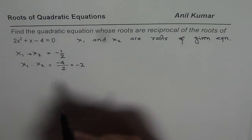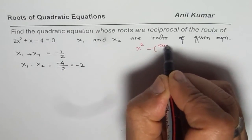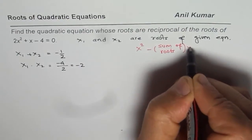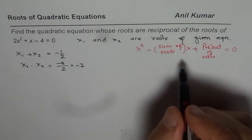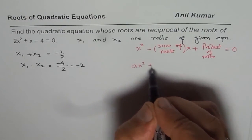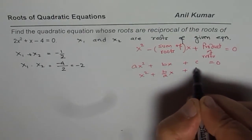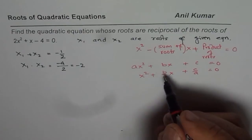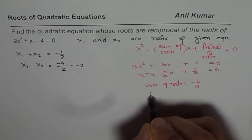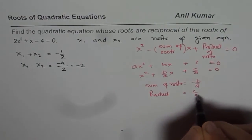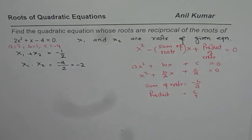How did we get this formula? Basically, if you recall, a quadratic equation can be written as x squared minus (sum of roots) times x plus (product of roots) equals 0. Writing the general equation ax squared plus bx plus c equals 0, if I divide by a, I get x squared plus (b over a)x plus (c over a) equals 0. So the sum of roots is minus b over a and the product is c over a. In this equation, a equals 2, b equals 1, and c equals minus 4.